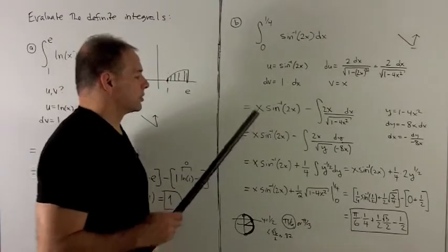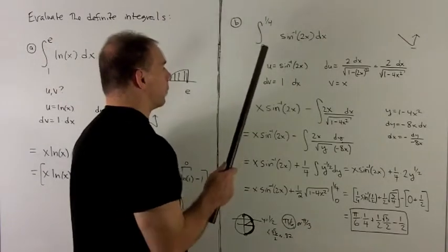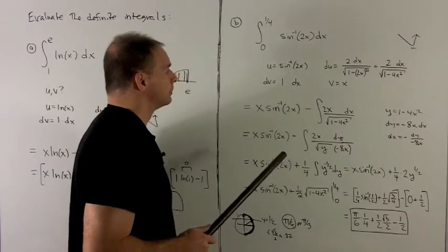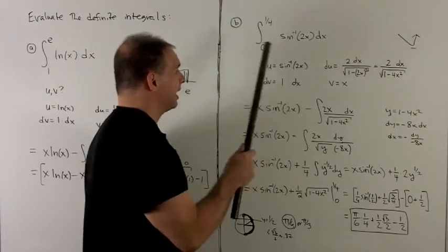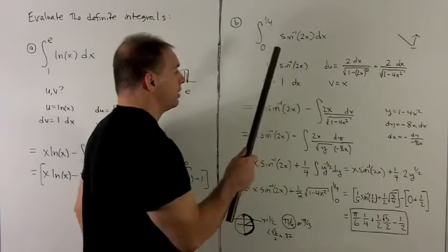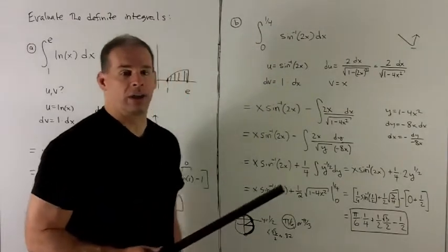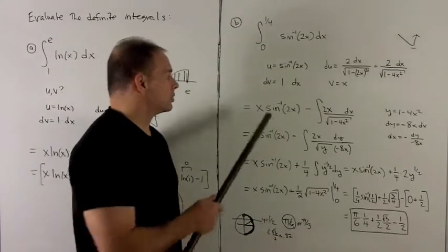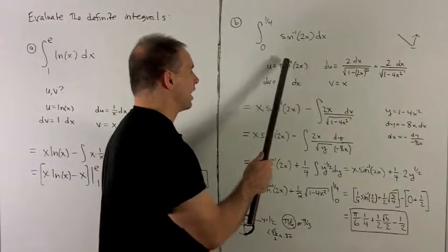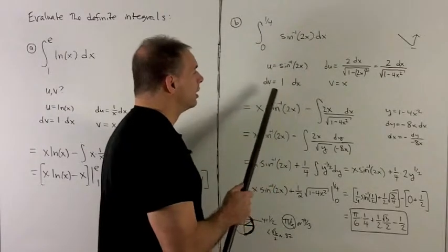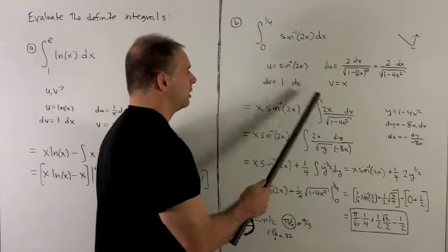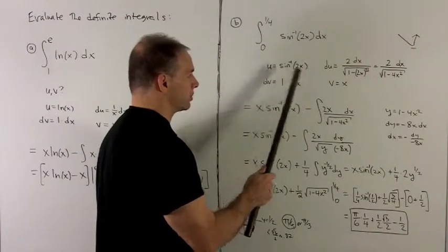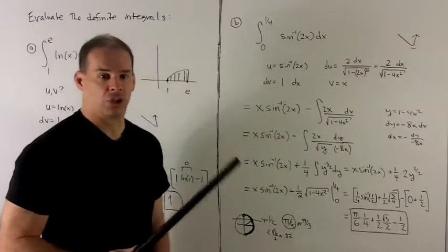Let's try another one. We'll go from 0 to 1/4 of sine inverse 2x dx. Same idea — I only have one function, so I have to let the other function be equal to 1. We don't want to let it be u because then du equals 0. So dv equals 1 dx, and u equals sine inverse 2x. The antiderivative of 1 gives me v equals x.